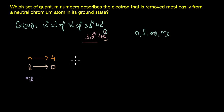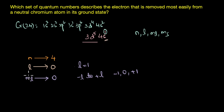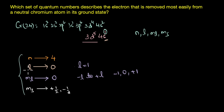The magnetic quantum number ml tells us the number of orbitals in the subshell and their orientation. Since ml depends on l and l is zero, ml is also zero. If l were one, ml could range from minus l to plus l, giving minus one, zero, and plus one — corresponding to p orbitals. But for the s orbital, ml is zero. Finally, the spin quantum number ms can be either plus half or minus half. That completes the set of quantum numbers for the 4s1 electron of neutral chromium.